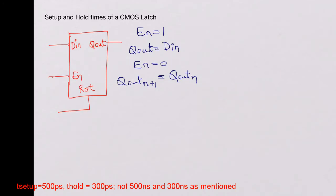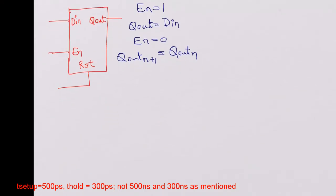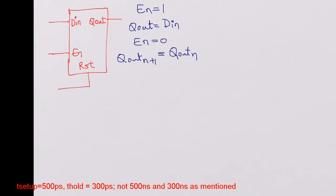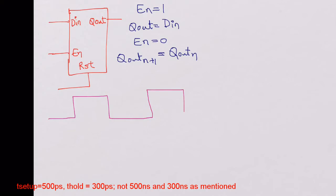To understand this a little better and to understand what setup and hold times are, we will draw a timing diagram. Let's assume the enable is just a clock. We'll take two cycles of the clock — two rising and two falling edges. Let me draw DN in a particular fashion and you will understand as I go along why I did that. So I keep DN low coming in.